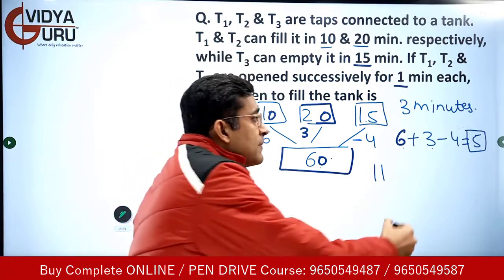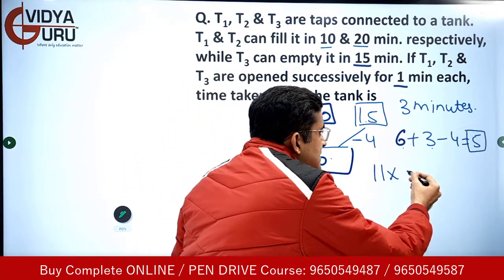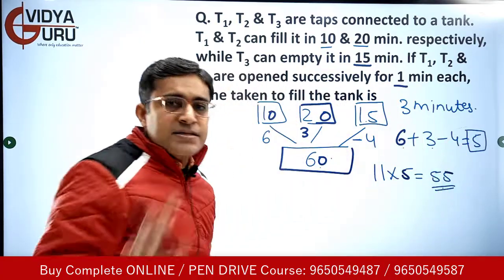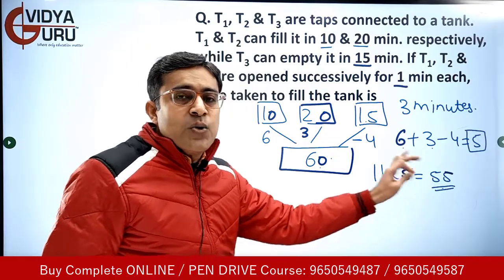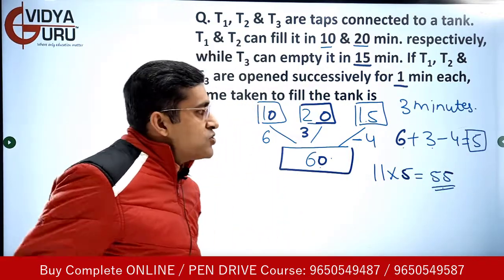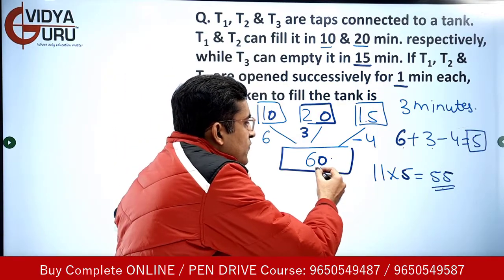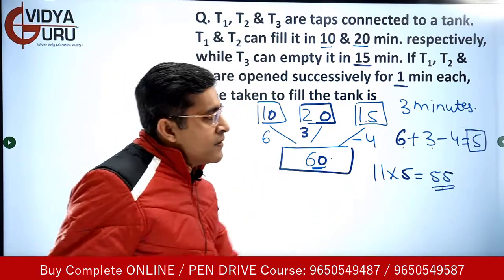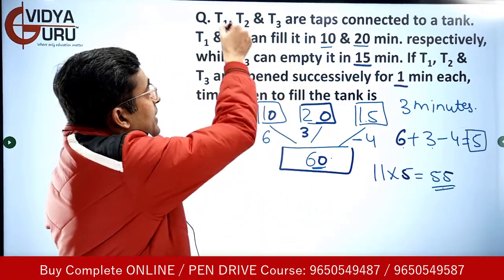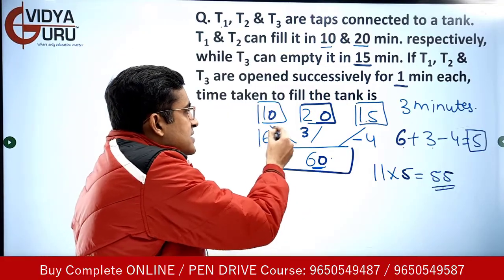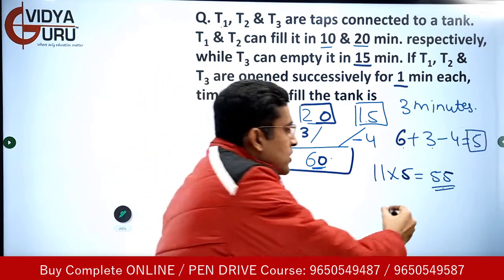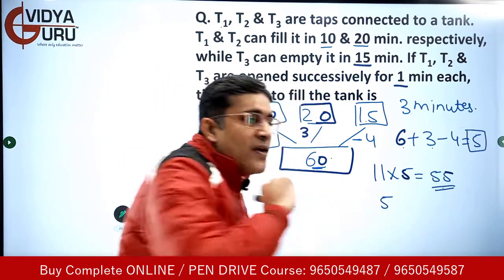We will require 11 complete cycles. In 11 complete cycles, how much work is done? In one cycle we do 5 units, so in 11 cycles a total of 55 units work is done. Now we are left with 5 units of work — 55 is done and the remaining work is 5 units. Now think about T1: T1 can do 6 units in 1 minute, and the remaining work needed is 5 units.